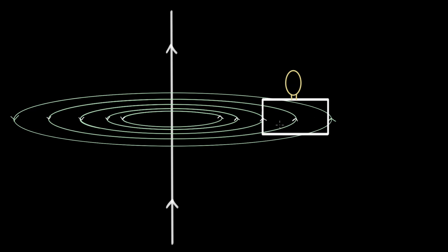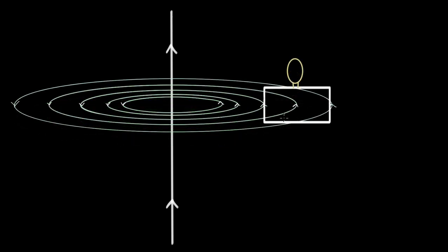There are other ways to change the magnetic field strength through the loop. For example, if we increase the current in the wire, that generates stronger magnetic field lines. We wouldn't even need to move the loop — continuously increasing the current keeps producing stronger field lines, continually changing the flux through the loop.